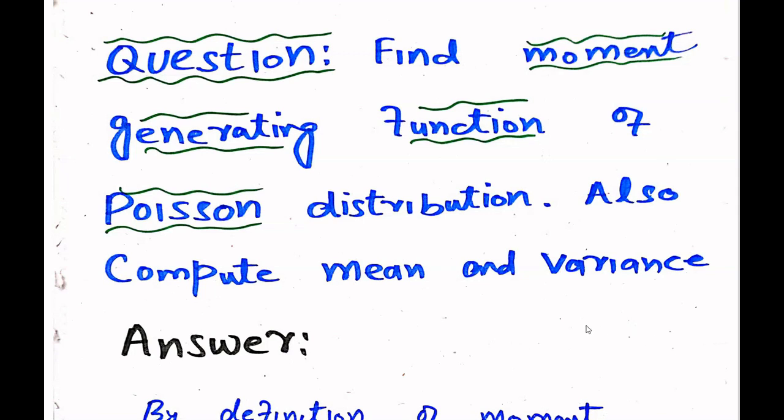In this video I solve the moment generating function of the Poisson distribution and also calculate the mean and variance of the Poisson distribution from the moment generating function.